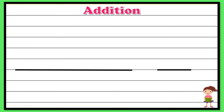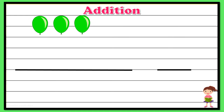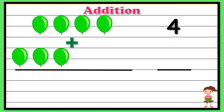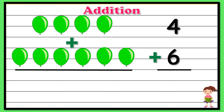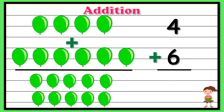Now let's take another example and start counting the objects: one, two, three, four — so we have four balloons — plus one, two, three, four, five, six — so we have plus six balloons. Now let's start counting the balloons again: one through ten. So totally we have ten balloons. Four plus six gives ten.